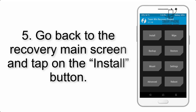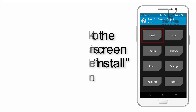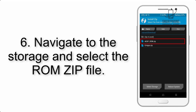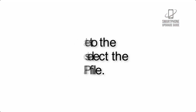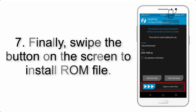Step 4: Swipe the button to wipe the device. Step 5: Go back to the recovery main screen and tap on the Install button. Step 6: Navigate to the storage and select the ROM zip file.